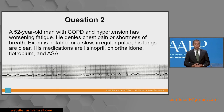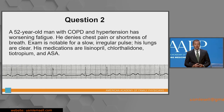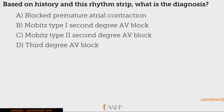Question two: a 52-year-old man with COPD and hypertension who has worsening fatigue. He denies chest pain or shortness of breath. Exam is notable for a slow, irregular pulse. Lungs are clear. Current meds: lisinopril, chlorthalidone, tiotropium, and aspirin. Take a look at that rhythm strip. The question is: what is the diagnosis? Options are: A, blocked PAC; B, Mobitz type 1 second-degree AV block; C, Mobitz type 2 second-degree AV block; or D, third-degree AV block.